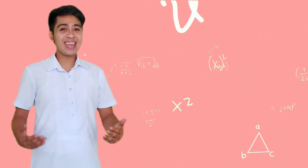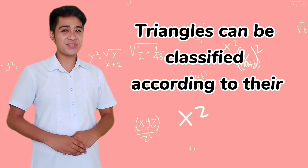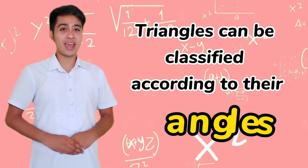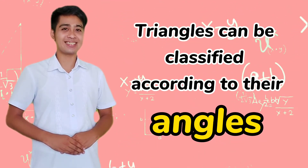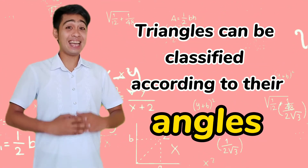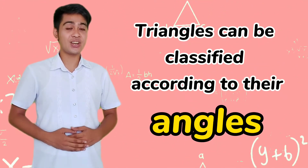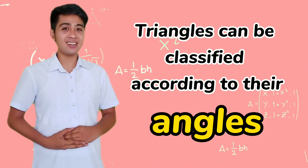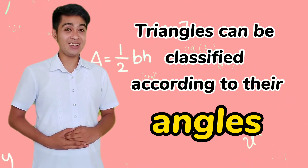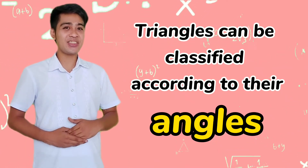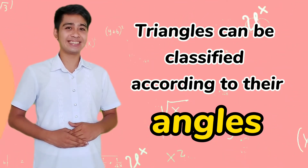Triangles can be classified according to sides and angles. First, triangles can be classified according to their angles. I know that you already have knowledge of the kinds of angles. Now, let's connect these to triangles.